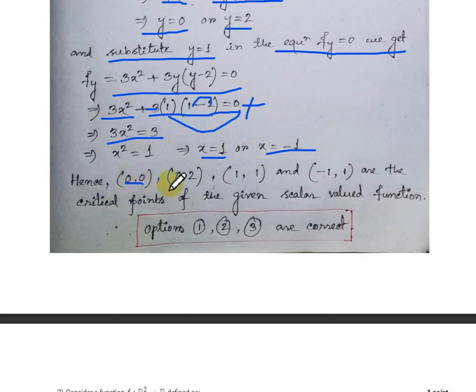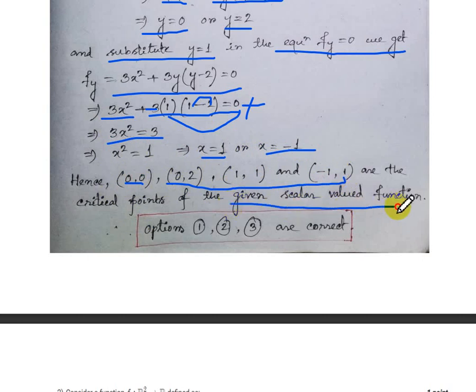Hence the critical points are (0,0), (0,2), (1,1), and (-1,1). Therefore options 1, 2, and 3 are correct.